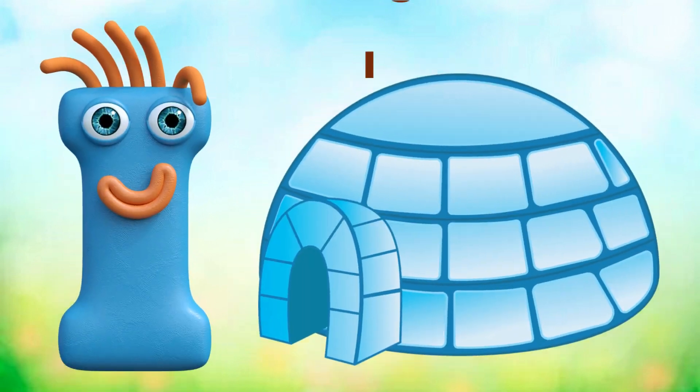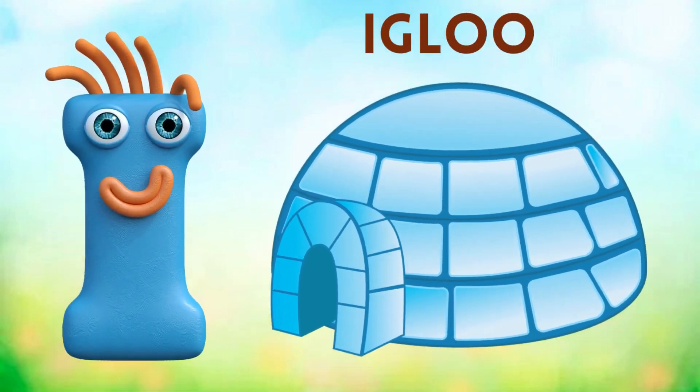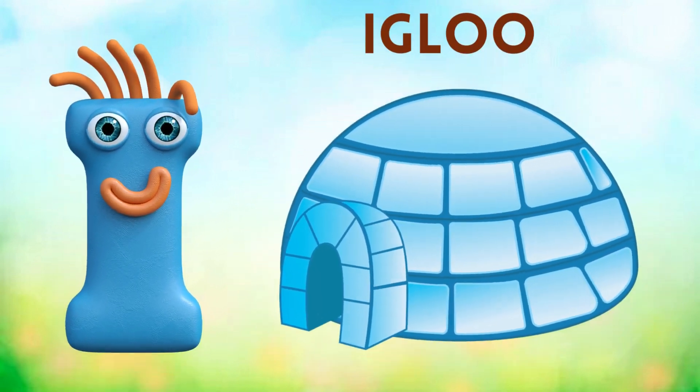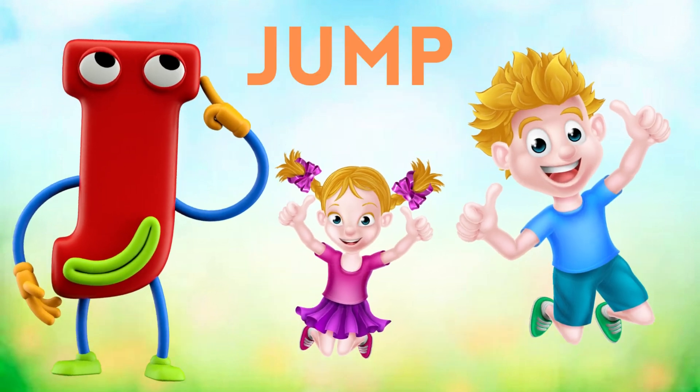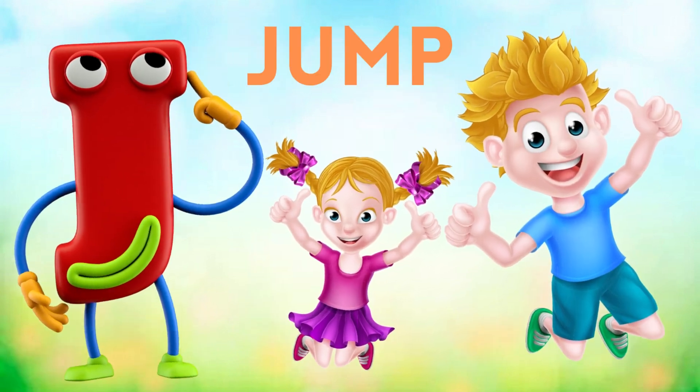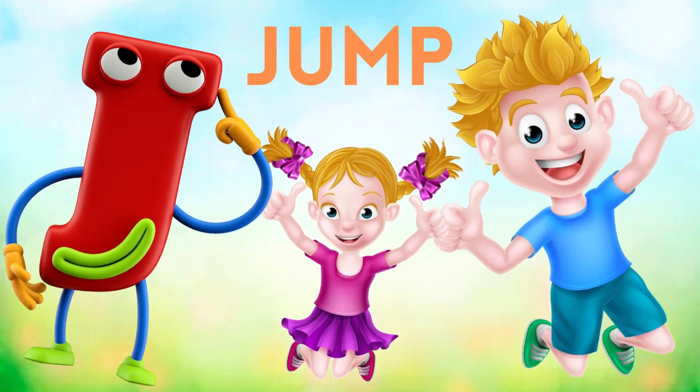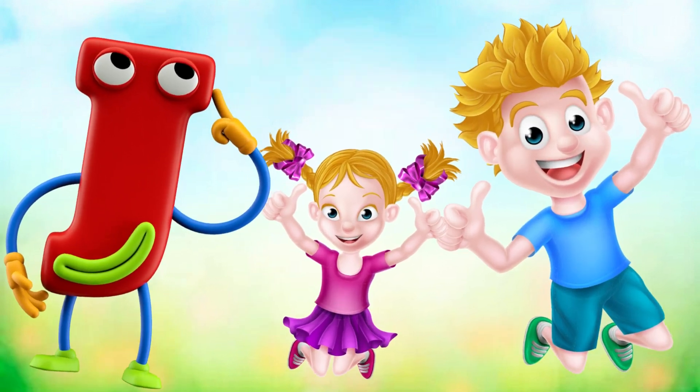I is for igloo, i-i-igloo. J is for jump, j-j-jump.